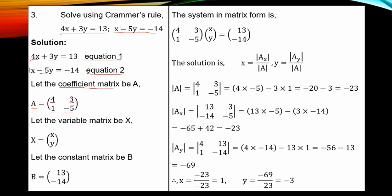After that, you define the variable matrix — you are looking for variables S and Y. Then we define the third matrix as the constant matrix, the right-hand side of the system. Equation 1 gives 13, equation 2 gives minus 14. After this, you put the system in matrix form: the coefficient matrix times the variable matrix equals the right-hand side.